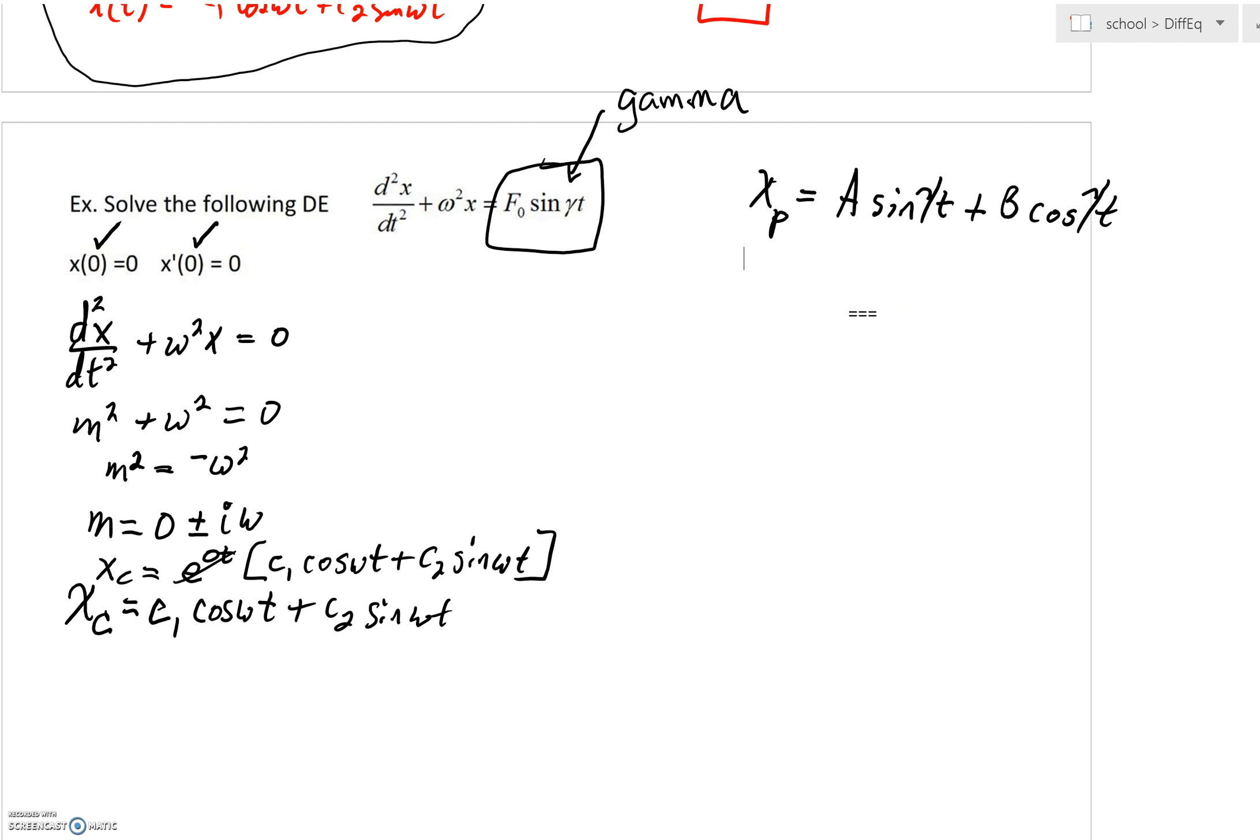Looks like we had a little bit of a problem there. Let's fix that back up. So we'd have Aγ, not lambda but gamma, pardon me,